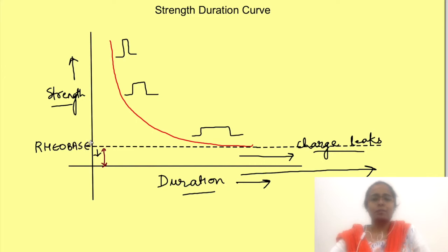But in practical terms, is it really possible to give a current for infinite duration? Will you wait till infinity to get that one value? So in practical terms, it is generally considered that minimum current strength which given for 300 milliseconds duration produces an action potential is rheobase.